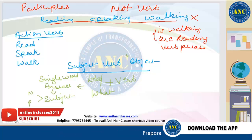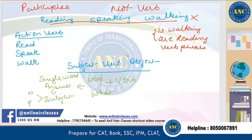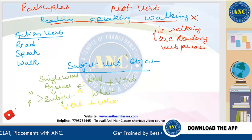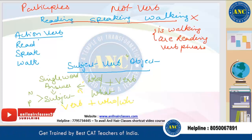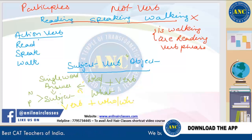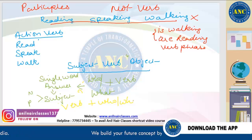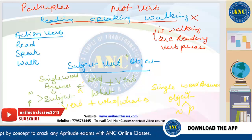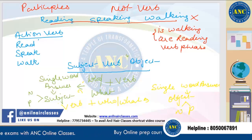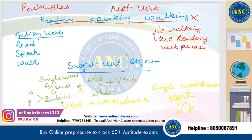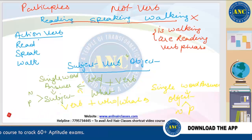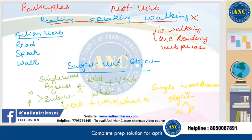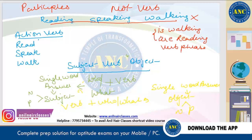The subject will always be either a noun or a pronoun. To find the object, which is placed after the verb, find the verb first, then ask the question 'who' or 'what' after the verb. Again you get a single word answer — that is your object, which will also be either a noun or a pronoun. Only nouns and pronouns can act as subject or object.